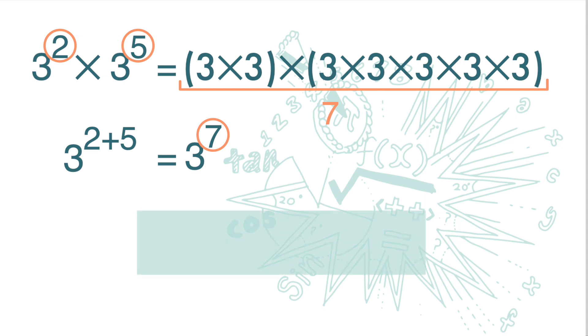So we have this formula: a to the power of m times a to the power of n is equal to a to the power of the sum of the indices, m plus n.